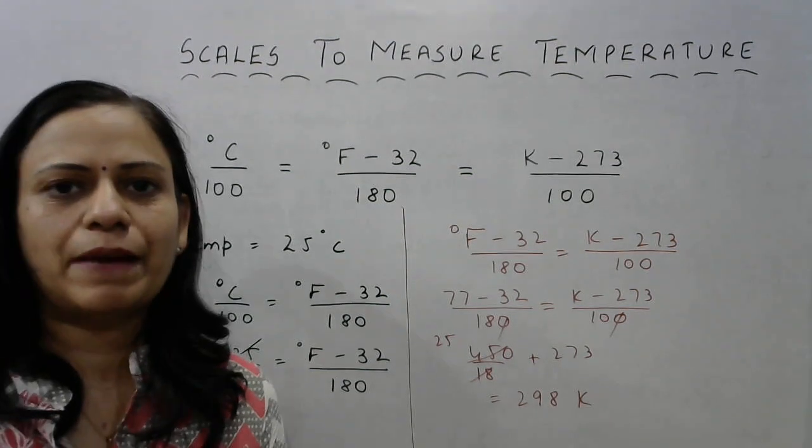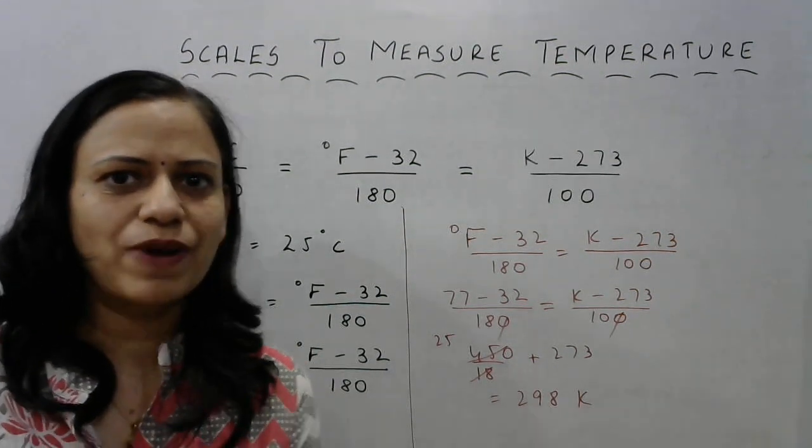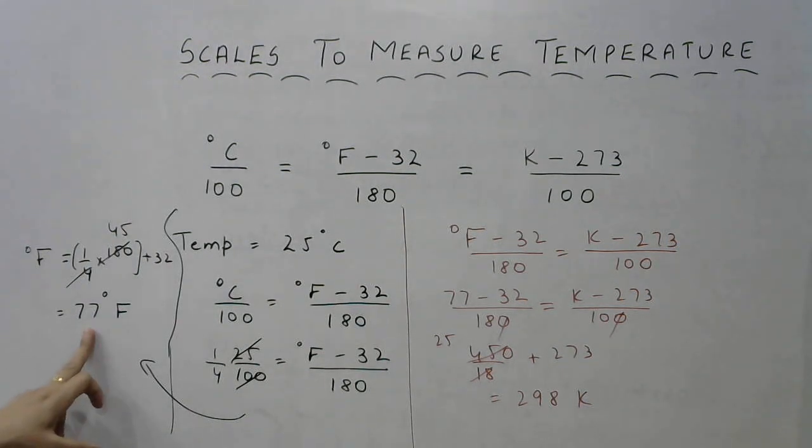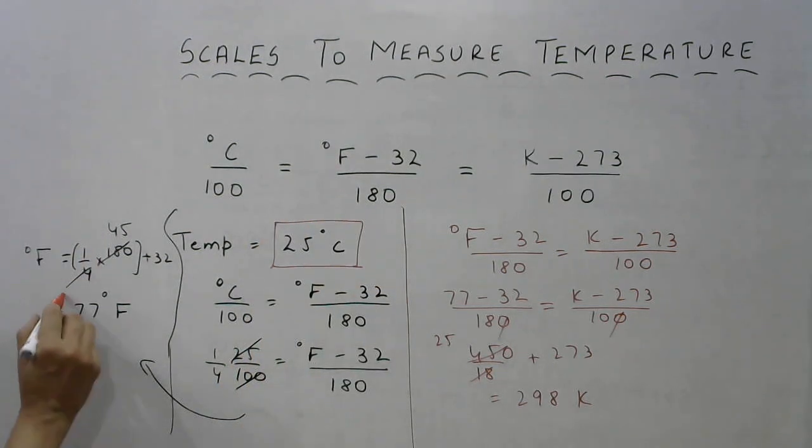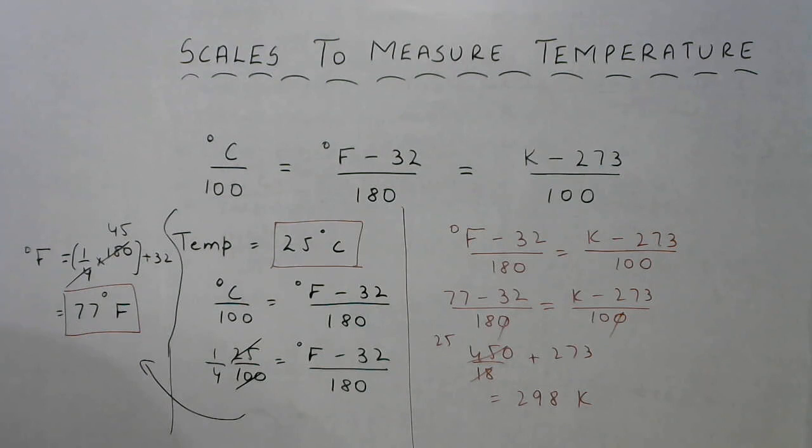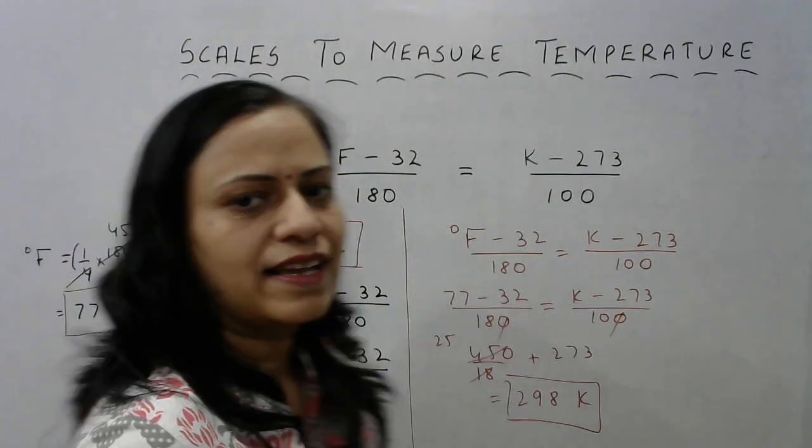So that means a temperature of 25 degrees Celsius is equal to 77 degrees Fahrenheit and 298 Kelvin. So on the Celsius scale, the temperature which is 25 degrees Celsius is equal to 77 degrees Fahrenheit or 298 Kelvin.